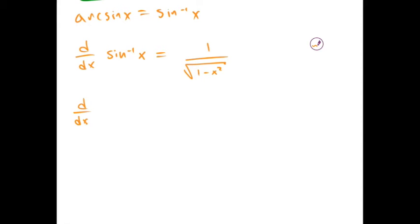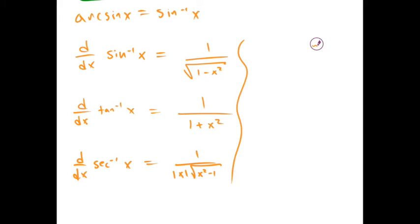Then the derivative of inverse secant is 1 over absolute value of x times the square root of x squared minus 1. And then the derivative of the co-version of all of these.